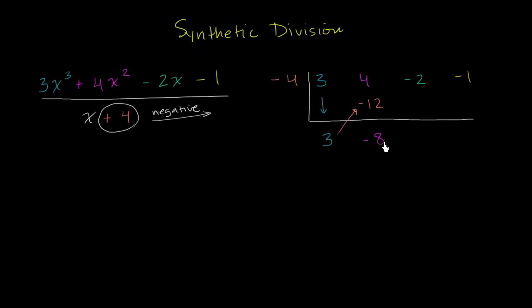Then you multiply negative 8 times the negative 4. I think you see the pattern. Negative 8 times negative 4 is positive 32. Now we add negative 2 plus positive 32. That gives us positive 30.